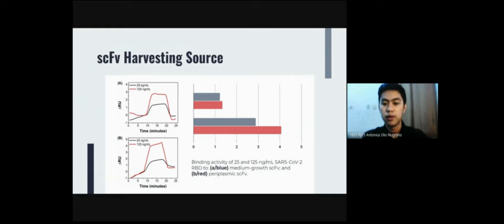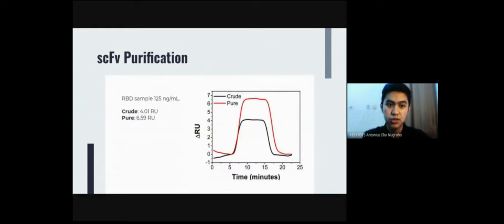So we choose the periplasmic SCFV to be purified in the next stage. And the purification process is proved to enhance the response of the periplasmic SCFV as shown in the graph in this slide. And therefore, after seeing this enhancement, we choose the purified periplasmic SCFV for the biosensor system.